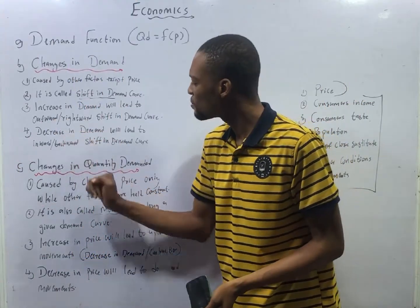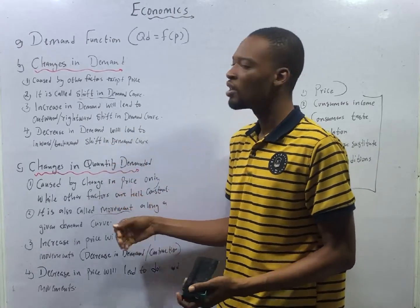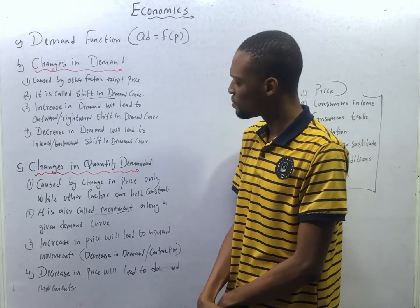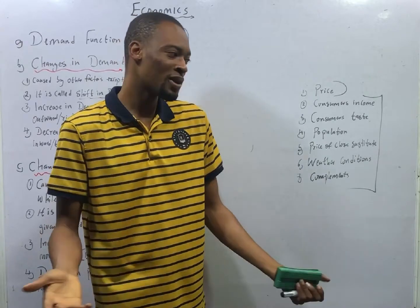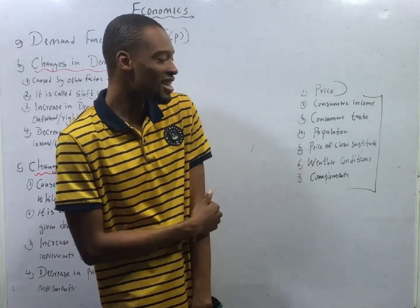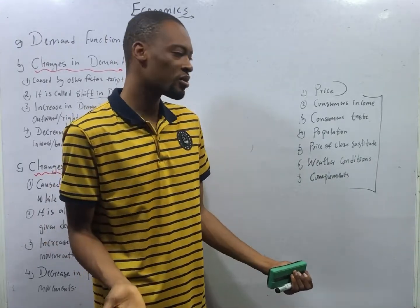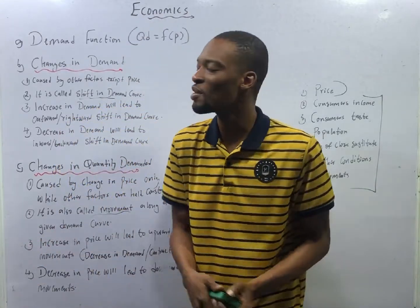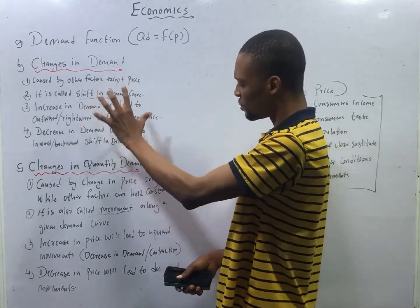A decrease in demand will lead to an inward or backward shift in the demand curve. What will lead to a decrease in demand? Consumer's income reduction, consumer's taste changes unfavorably, reduction in population, increase in price of substitute goods, unfavorable weather conditions, and increase in price of close substitutes — all these will lead to a decrease in demand.